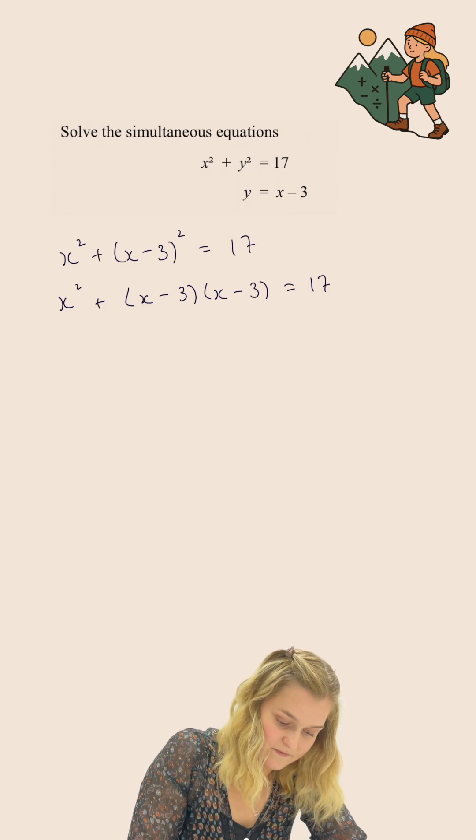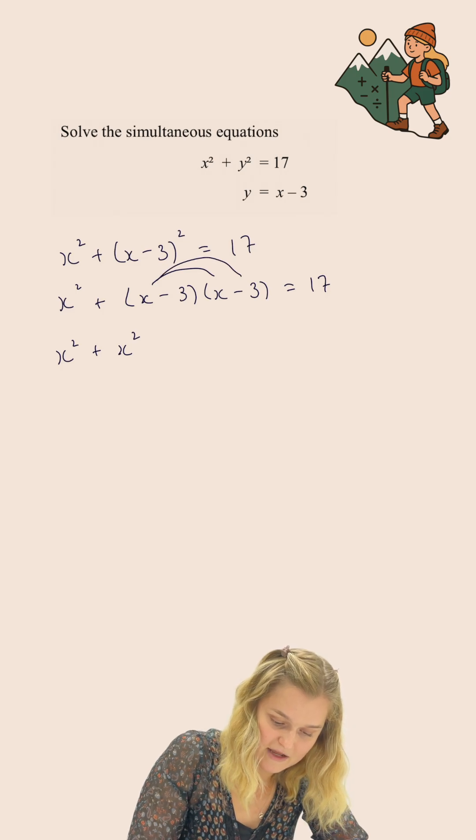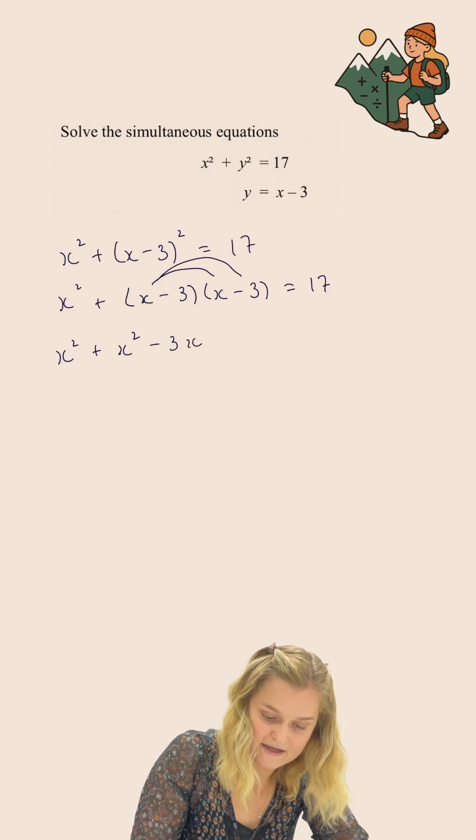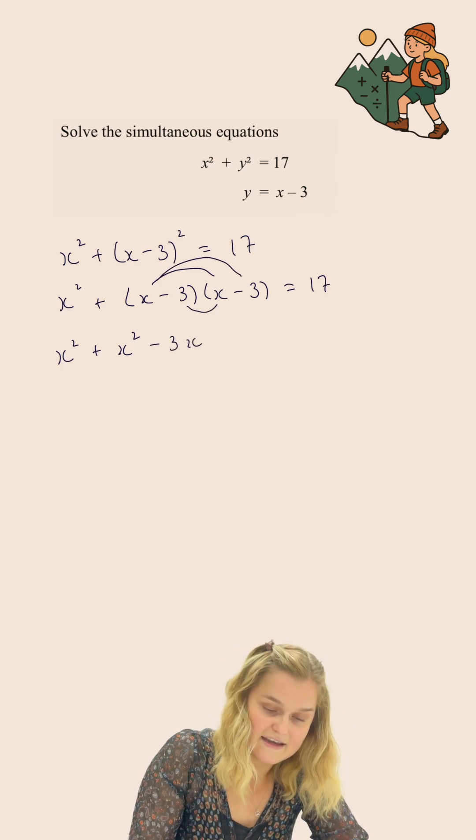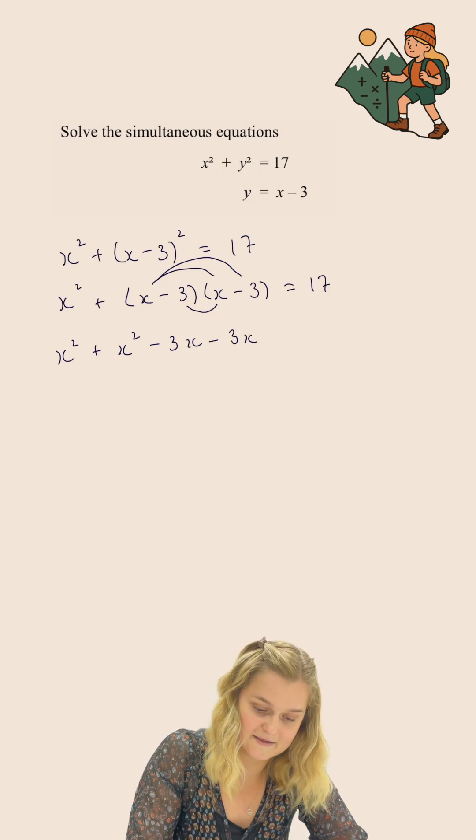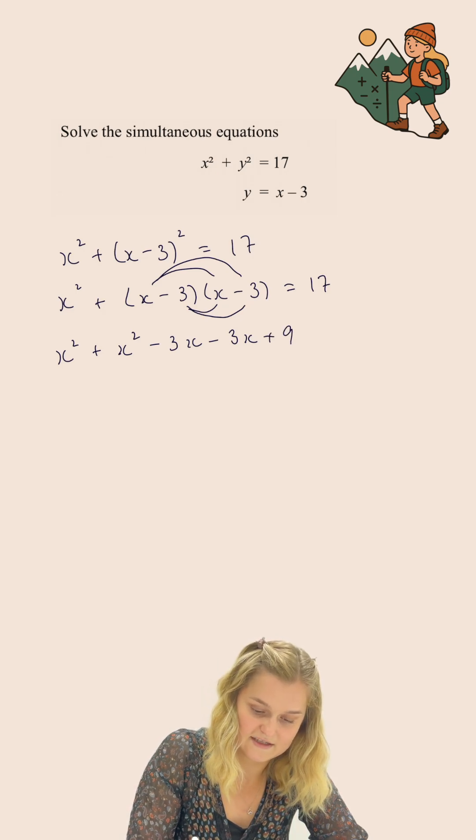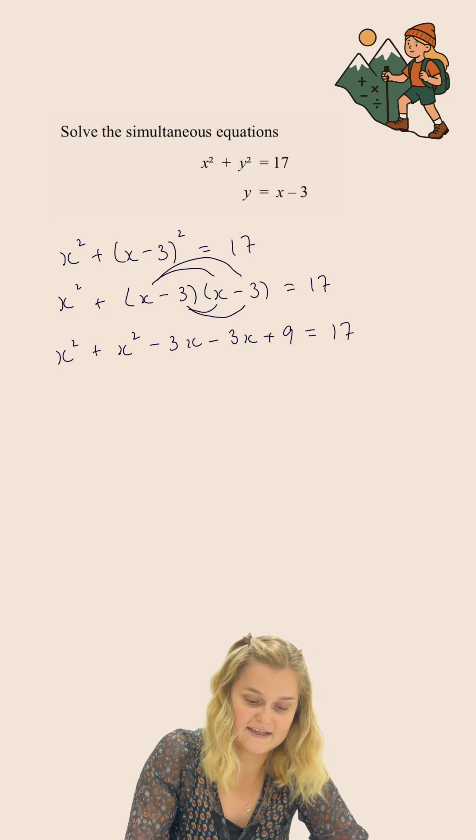I need to expand these brackets out. So I'm going to do x multiplied by x, which gives me x squared; x multiplied by negative 3, which gives me negative 3x; negative 3 multiplied by x, which gives me another negative 3x; and negative 3 times negative 3, which gives me positive 9. And that still equals 17.